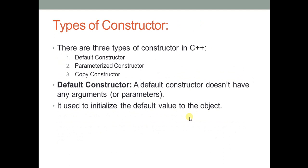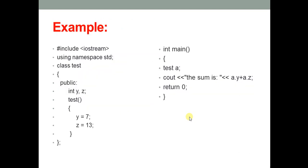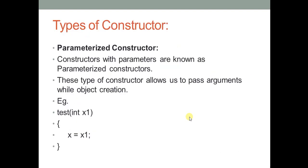The types of constructors we have seen are: default constructor, parameterized constructor, and copy constructor. A default constructor is a special member function whose name is similar to the class name and which does not accept any argument. Its purpose is to initialize default values to the object. The object will have some properties, and those properties are declared inside the class under the private or public section.